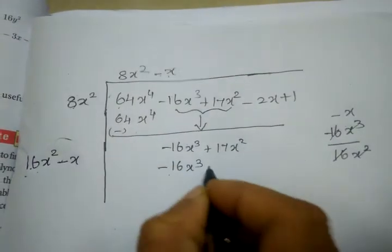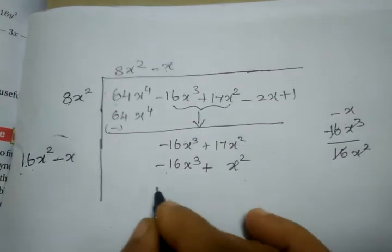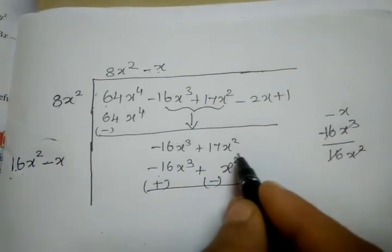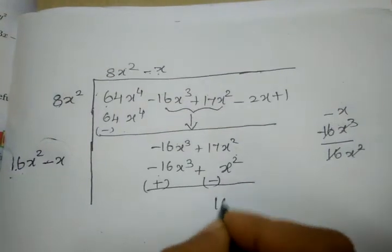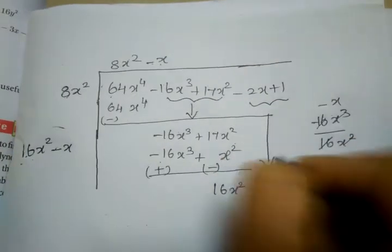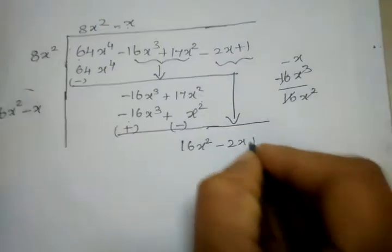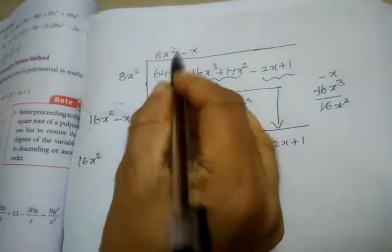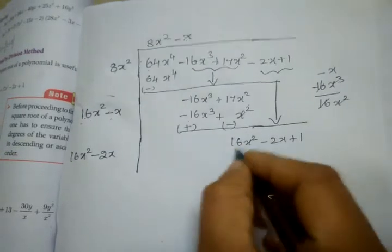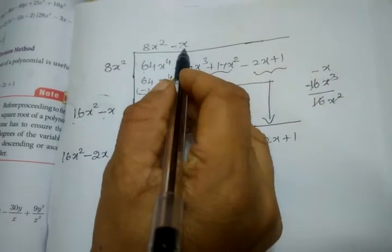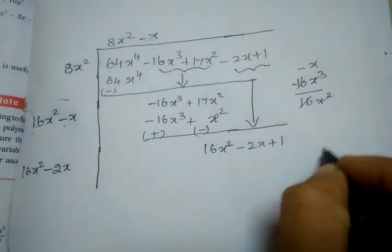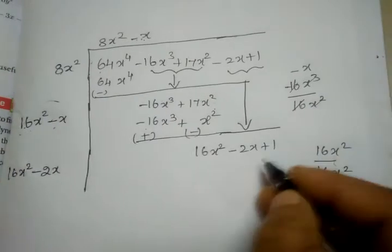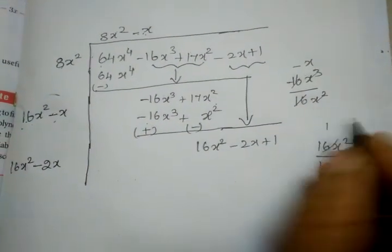Minus into minus gives plus. x into x is x square. Now changing the sign. This term cancels. So this term gives minus x square. The remainder includes minus x, minus 2x. Taking the next term: minus x square, minus x plus x, giving minus x. Then we bring down plus 1.